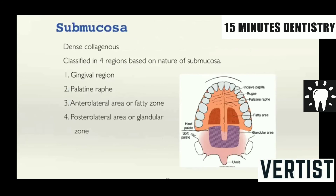The submucosa is dense collagenous, and based on that, the hard palate is classified into four regions by the nature of the submucosa: the gingival region just adjacent to the teeth, the palatal median region in the center, the anterior lateral area which is the fatty zone, and the posterior lateral area which is the glandular zone.